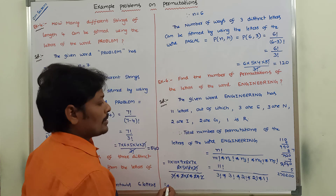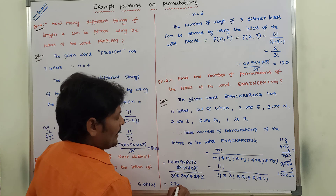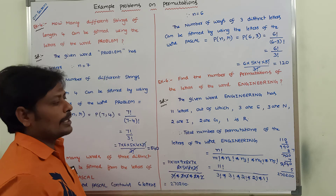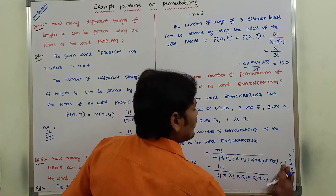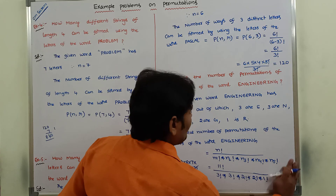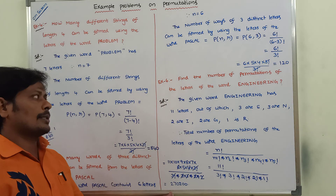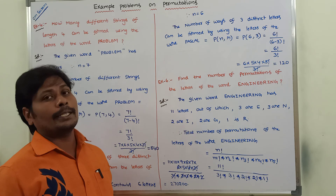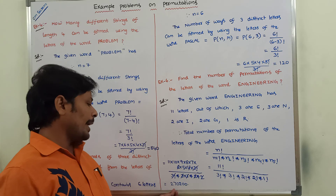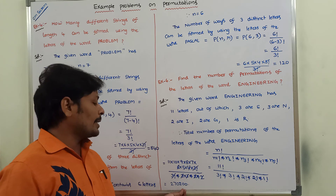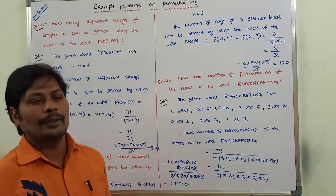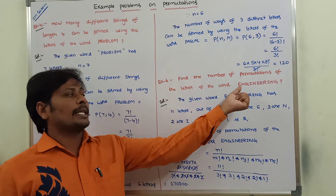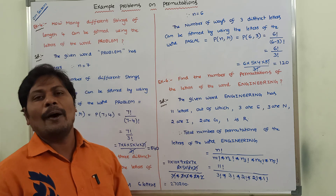So the answer is 2,70,200. The total number of permutations of the letters of the word ENGINEERING is 2,70,200.